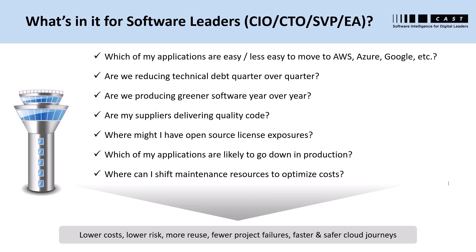CAST Highlight helps leaders answer critical questions about their software — things like: are we reducing technical debt over time? Are we producing greener software? Are suppliers delivering quality code? Ultimately, answering these questions helps organizations lower costs, reduce risk, improve reuse, have fewer project failures, and have faster and safer journeys to the cloud.